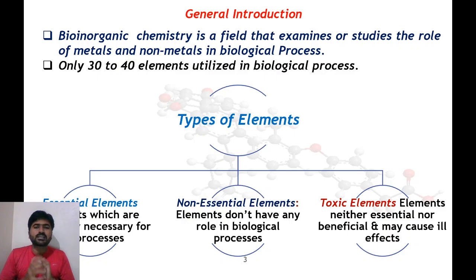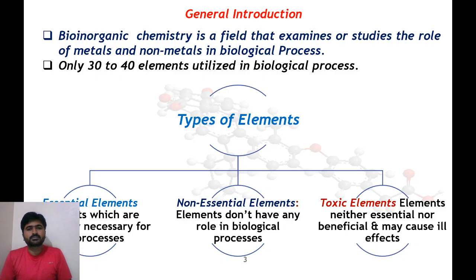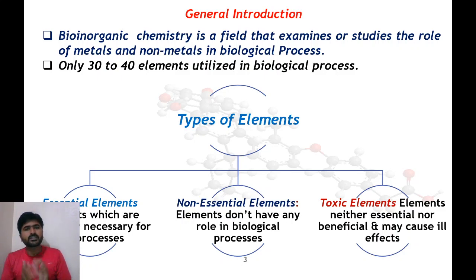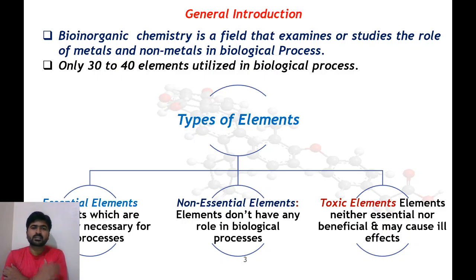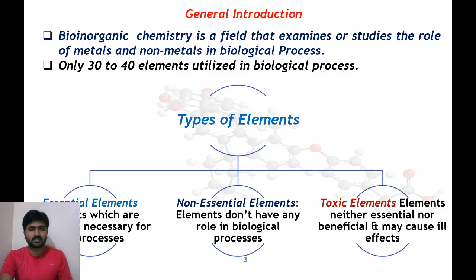The next type is toxic elements. These are elements that are neither essential nor beneficial, and they may cause ill effects to the biological process. There is absolutely no need for these elements in the biological process, and if they are present, they cause ill effects. So therefore they are called toxic elements. These essential elements are further categorized into different parts, which we will discuss next.